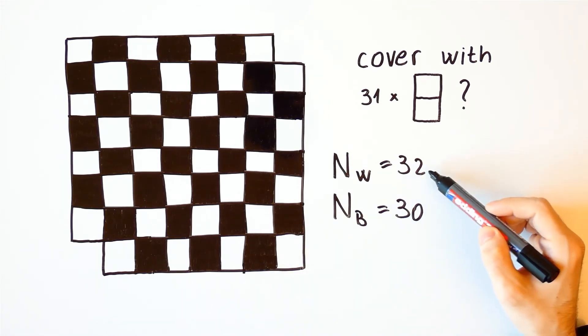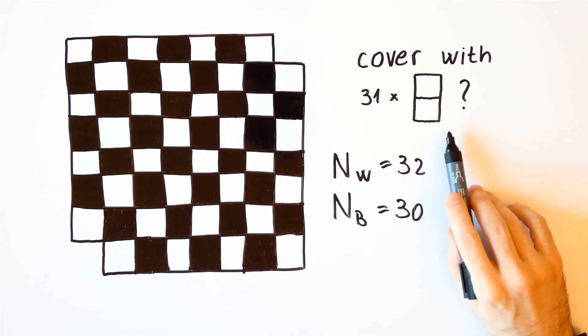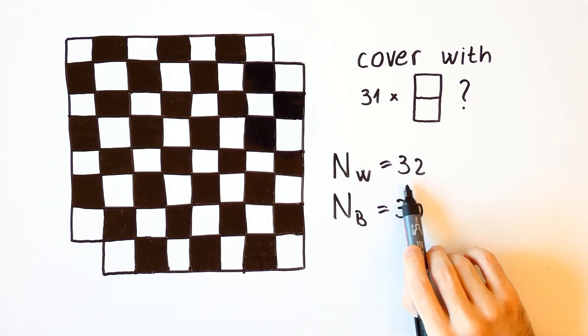So, in this case, there are 32 white squares and 31 dominoes and therefore we can't cover all 32 white squares.